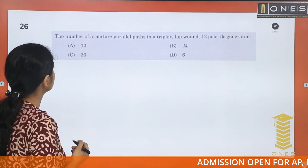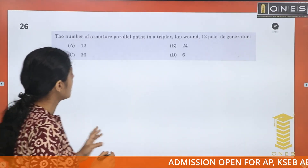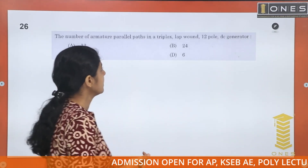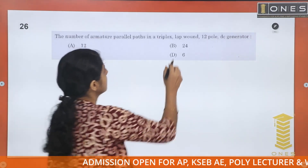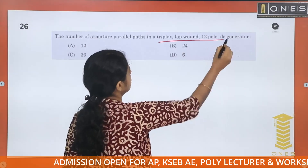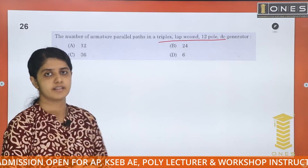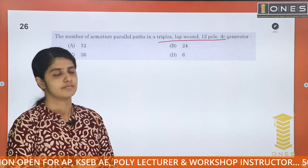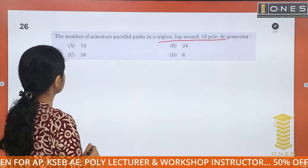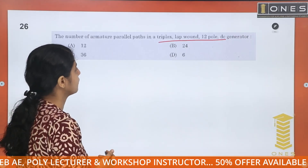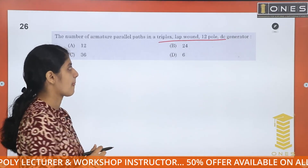Question number 26: The number of armature parallel paths in a triplex lap, 12-pole DC generator. The options are 12, 36, 24, and 6.